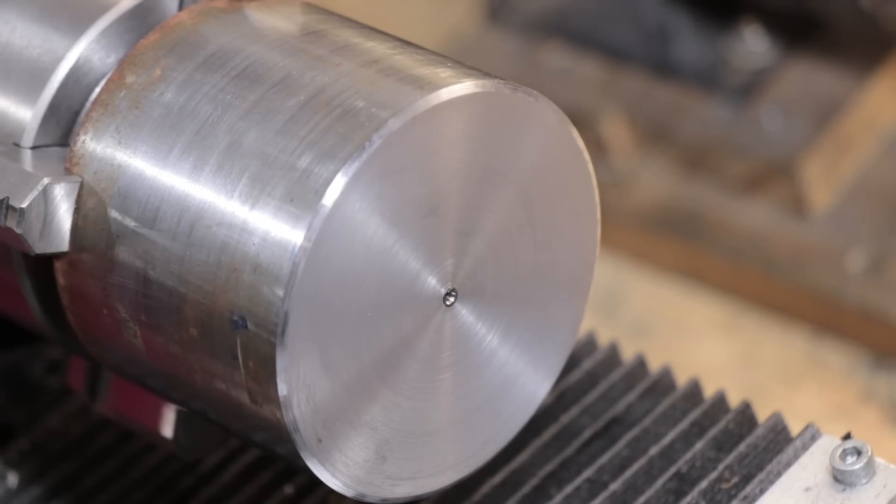With the facing done, I need to machine a recess that matches the mounting flange on the spindle.